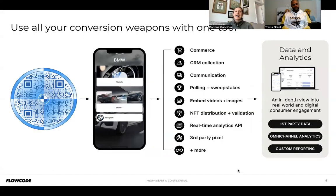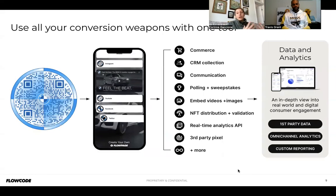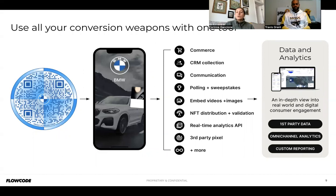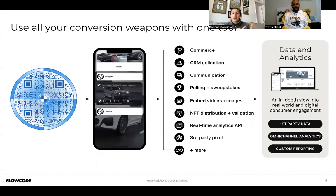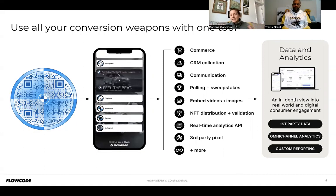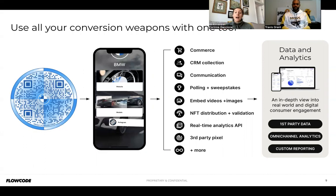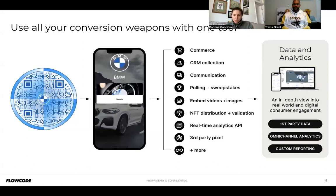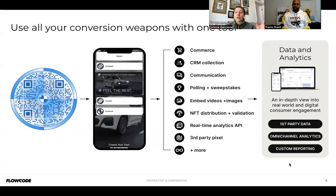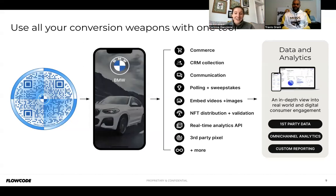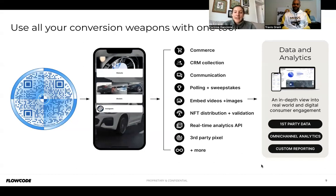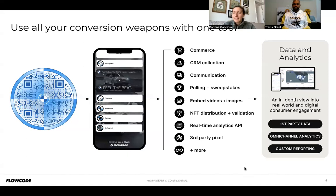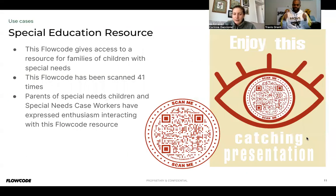This last slide is an entire visual of our suite, showing how the code flows into a page — including commerce, CRM, contact collection, communication, polling, sweepstakes, embedding videos, distributing NFTs, real-time analytics, API, and third-party pixels. It all flows into our data and analytics so you can understand where engagements are coming from and how to maximize them. I'll pass it over to Travis to talk about how he's leveraged the FlowCode suite.